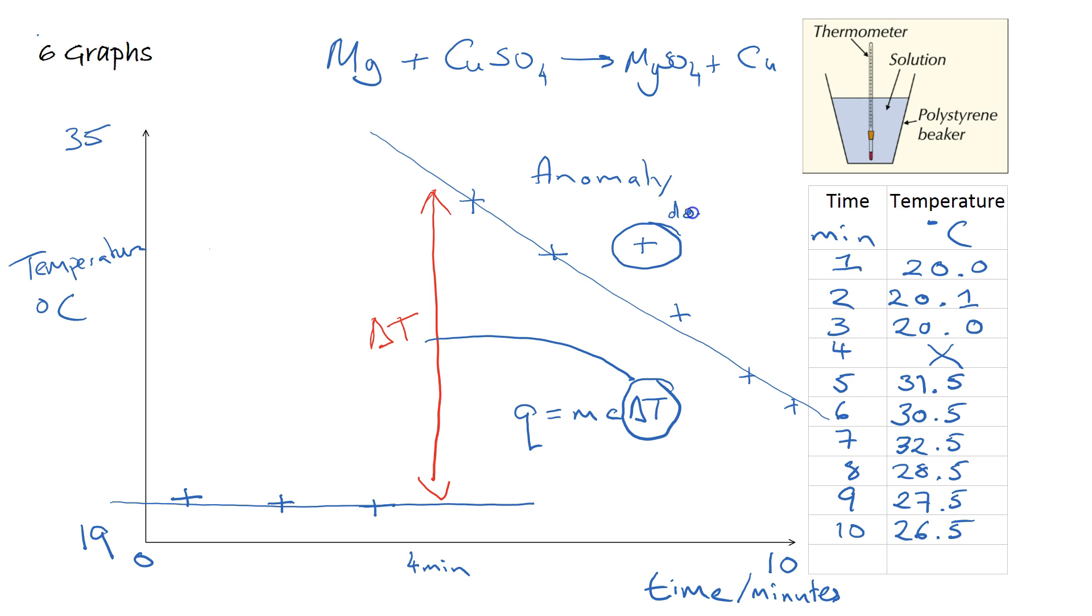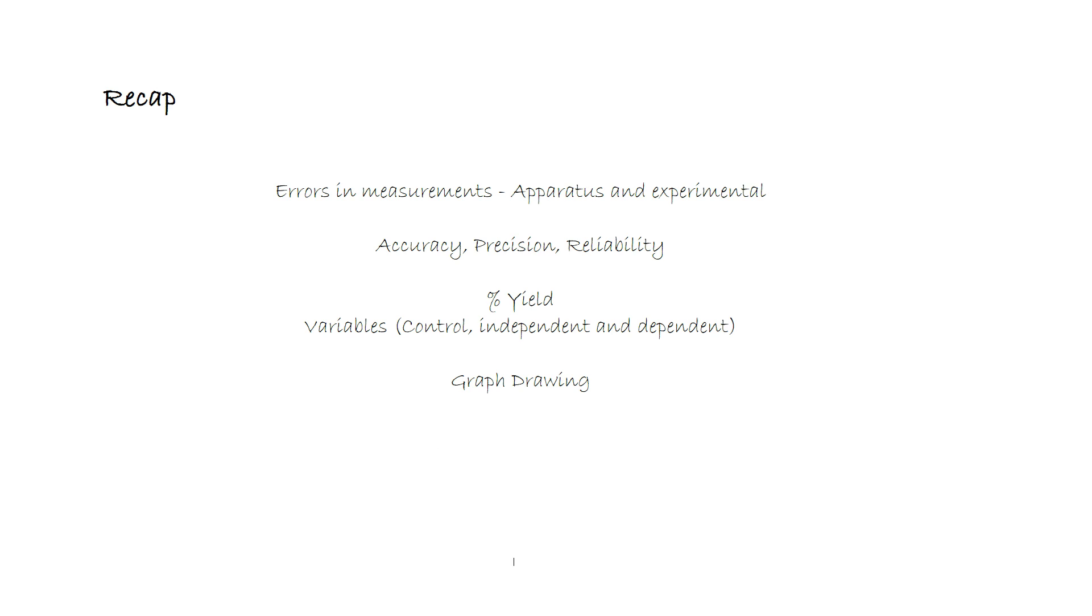Make sure your graphs use straight lines, crosses for your points, you have suitable scales, and that you have units for all of your axes. So just to recap, you should be happy with errors and measurements and how we can use that to determine the accuracy of your experiment, how we deal with precision and reliability, percentage yield in experiments, and also variables and graph drawing. Follow the links to the required practicals so that you know which ones you've got to be able to apply these situations to. I'll see you next time.